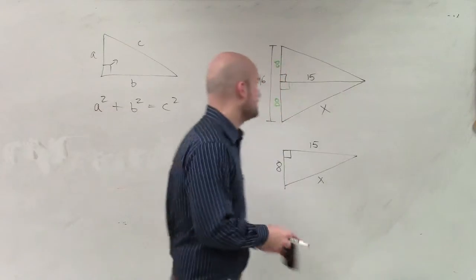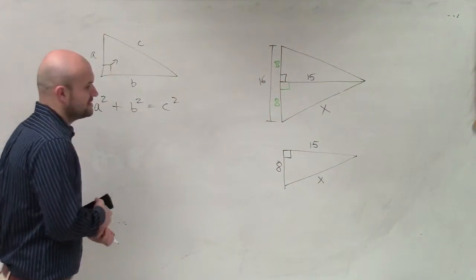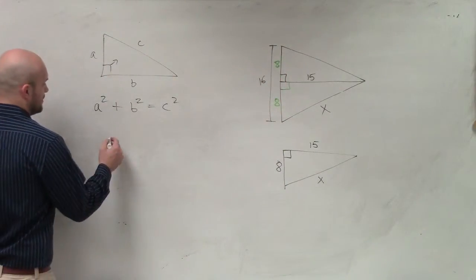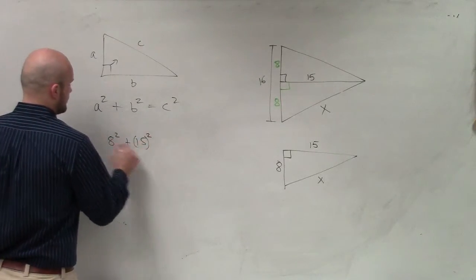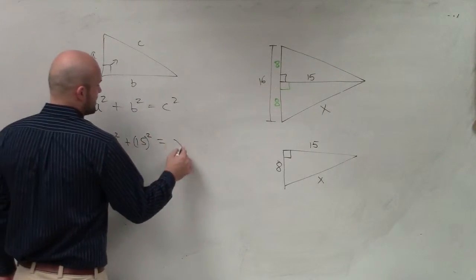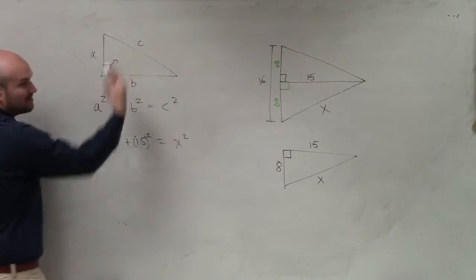So now it's going right out the Pythagorean theorem. So in this case, I have 8 squared plus 15 squared equals x squared, where x is going to represent my c.